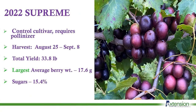Here is Supreme, our control cultivar. It also requires a pollinizer, so anyone interested needs to keep that in mind. Harvest in the previous season started on August 25th, a little later than others. Total yield of Supreme was 33.8 pounds per vine, and Supreme had the largest average berry weight at 17.6 grams — a real winner there. Sugars were a little lower than other cultivars but still relatively high at 15.4%.